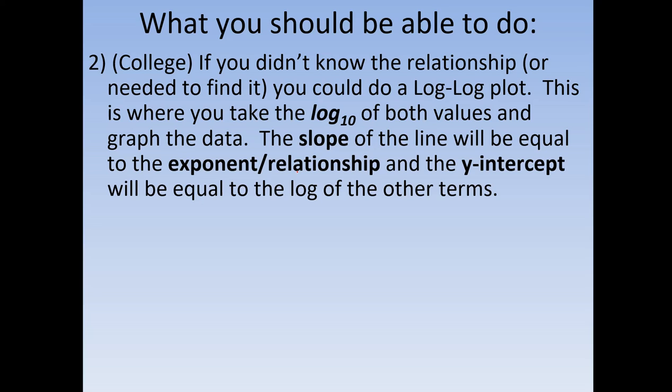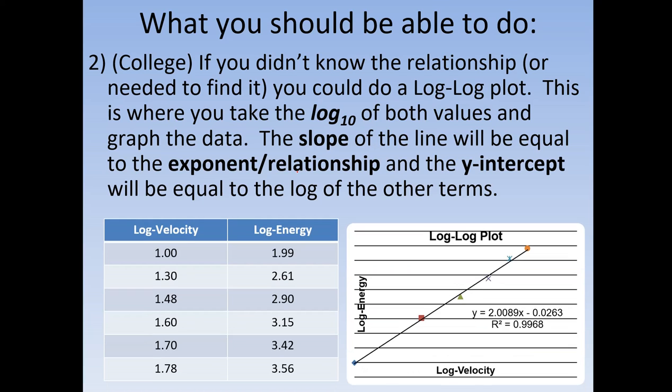Now, the other thing that you could do, this is more something that you would see in college. This is for the cases when you actually don't know the relationship, or if you're trying to verify or get the relationship, is you could do what's called a log-log plot. And this basically means that you take the log of both sides, or you take the log of both variables, and then what you end up getting is you still get a linear graph, but now the slope of the line actually tells you the square, or whatever the exponent is on that variable. So if you have a relationship like this, y being proportional to x squared, the slope will end up being 2.